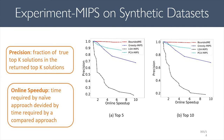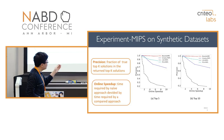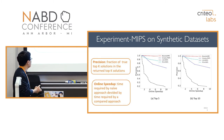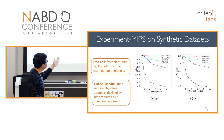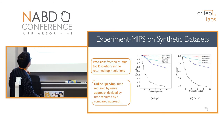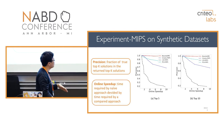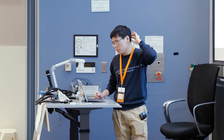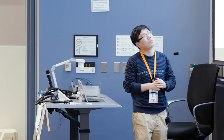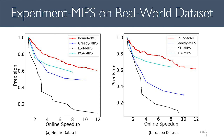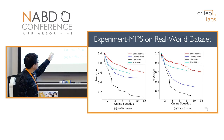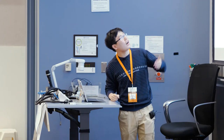We tested our approach on synthetic datasets. The left figure shows results for top-5 solutions and the right for top-10 solutions. The x-axis is online speedup — the time of the naive approach divided by the time of the compared approach — and the y-axis is precision, defined as the fraction of true top-K solutions in the returned top-K. Our approach, shown as the red line, achieves higher precision than other approaches for any given online speedup. We ran similar experiments on real-world datasets: the Netflix movie recommendation dataset and the Yahoo Music dataset, with the same favorable results.